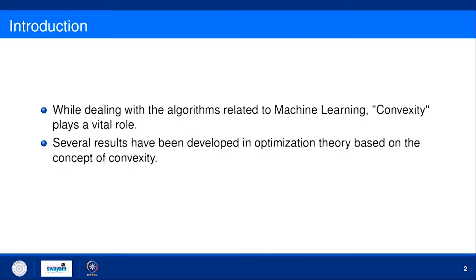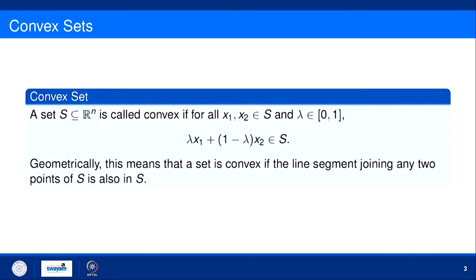Let us start with convex sets. While dealing with algorithms related to machine learning, convexity plays a vital role. Several results have been developed in optimization theory based on the concepts of convexity. First we will go through the basic definitions of convex sets and convex functions. A set S ⊆ ℝⁿ is called convex if for all x₁, x₂ in S and λ between 0 and 1, λx₁ + (1−λ)x₂ is also in S.